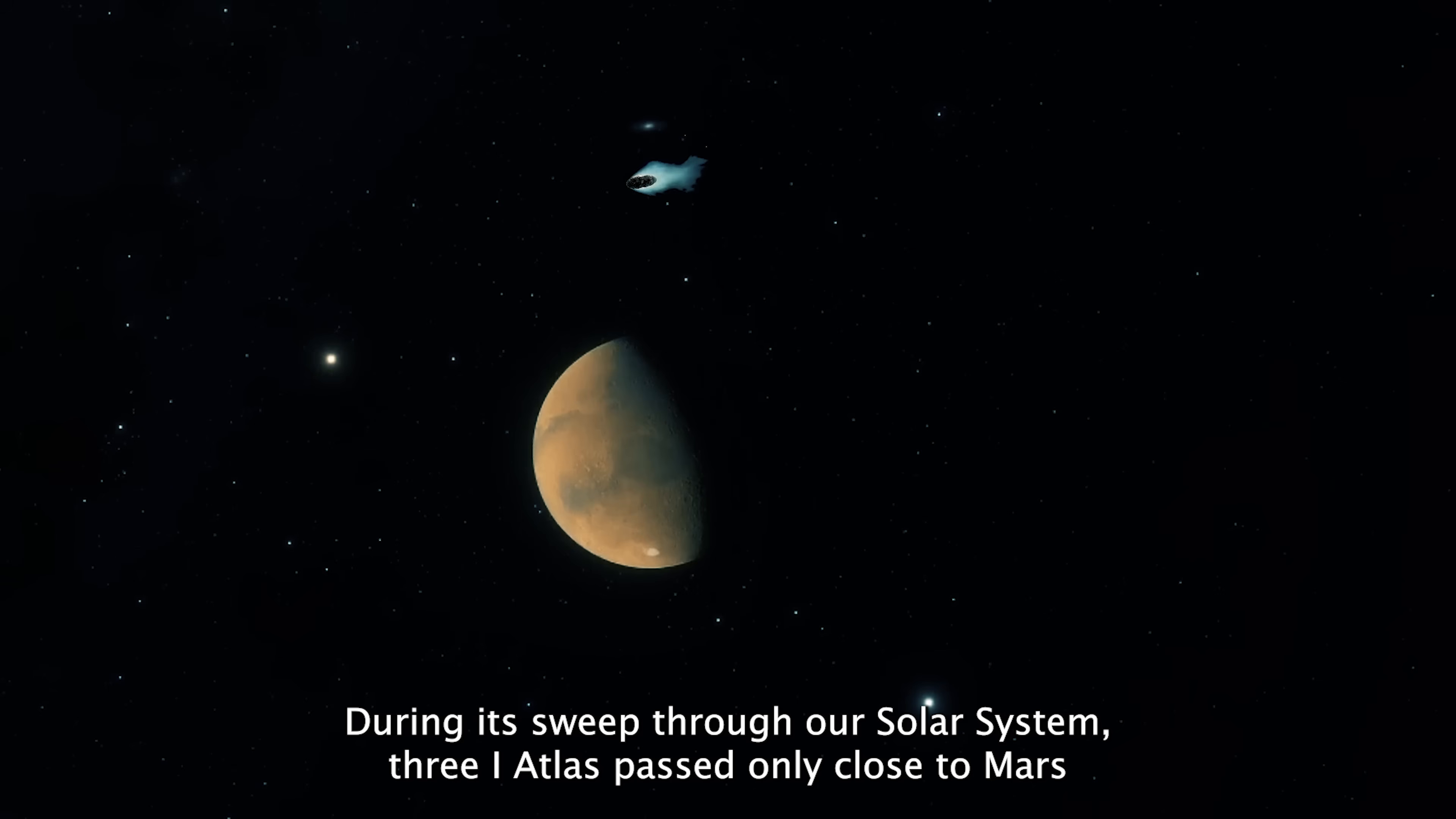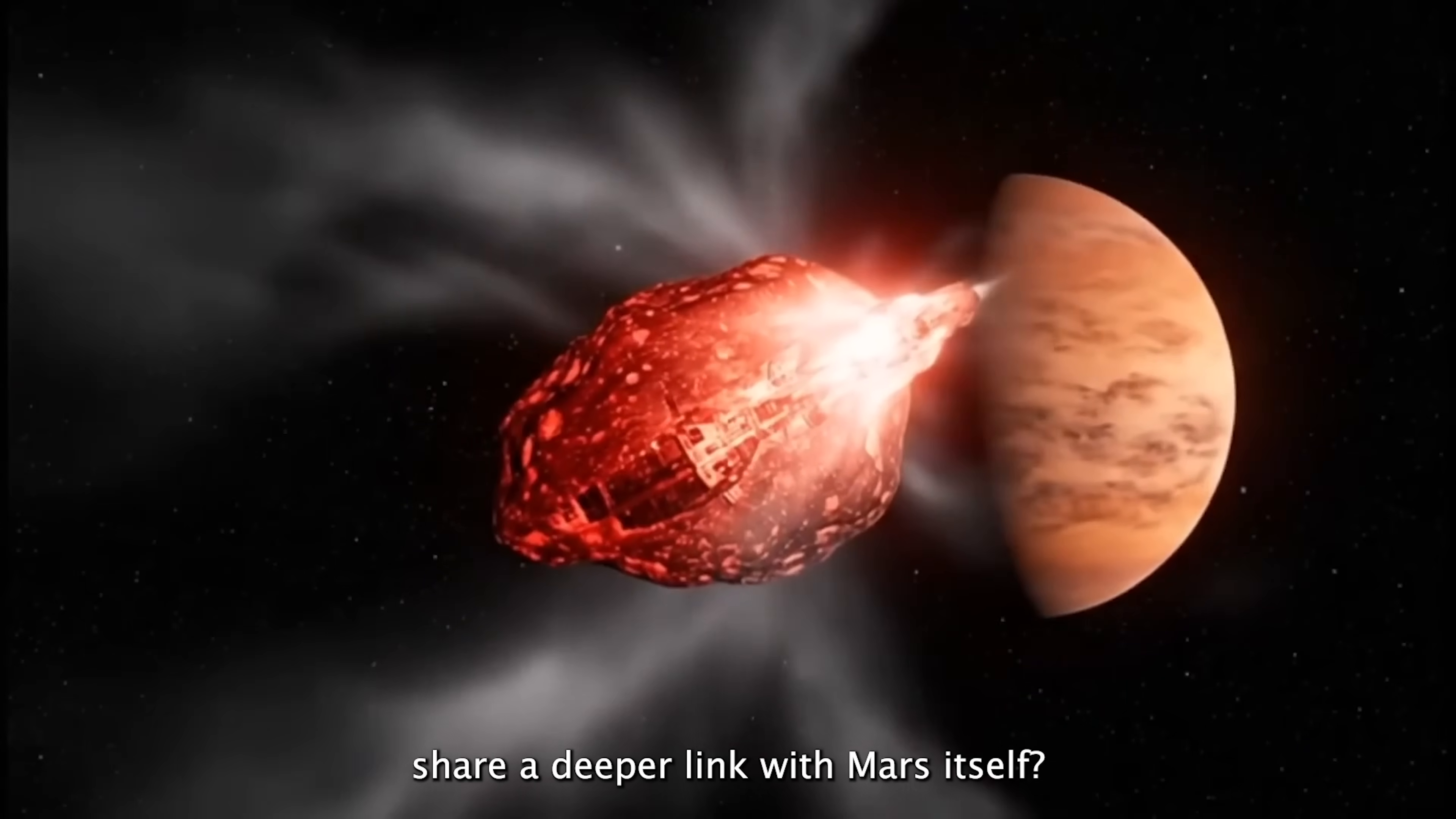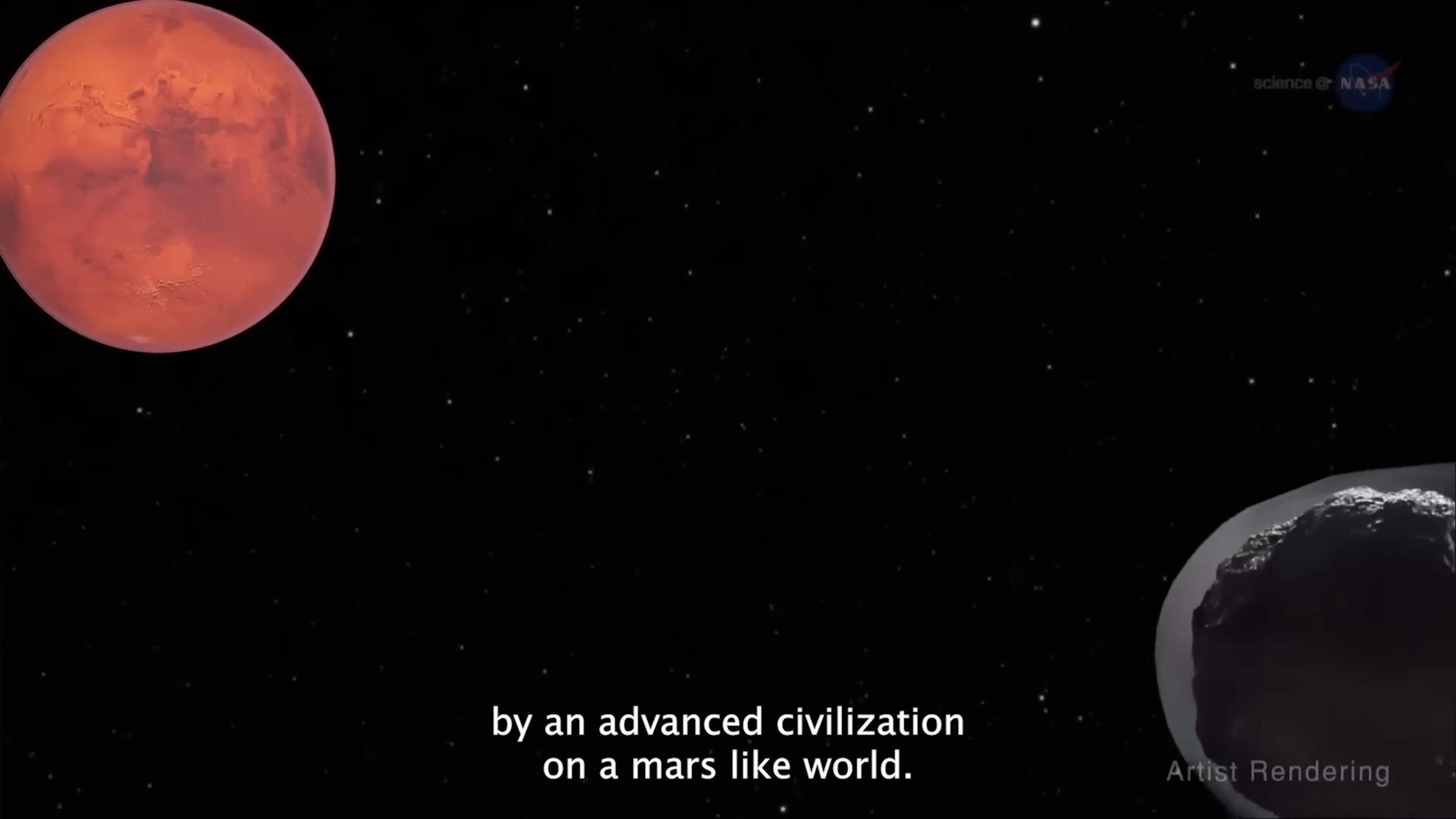Here's where it gets even more fascinating. During its sweep through our solar system, 3i Atlas passed only close to Mars, and its makeup and appearance eerily mirror the red planet. Could that be pure coincidence? Or does this visitor share a deeper link with Mars itself? Some scientists are now entertaining a radical idea that 3i Atlas may not be entirely natural. Perhaps it formed, or was even engineered, by an advanced civilization on a Mars-like world.